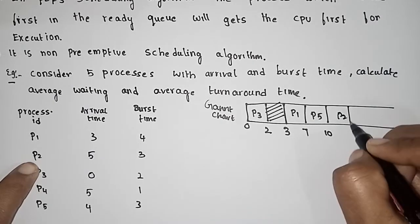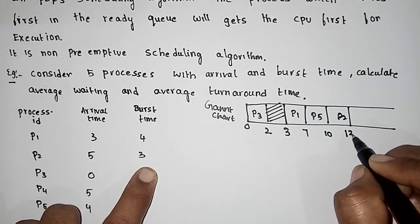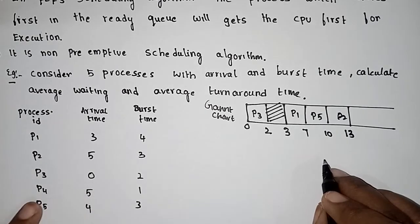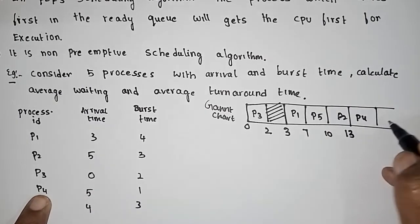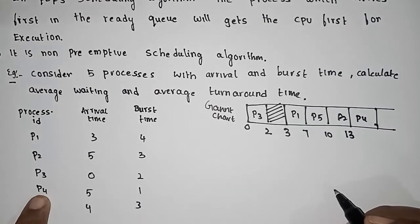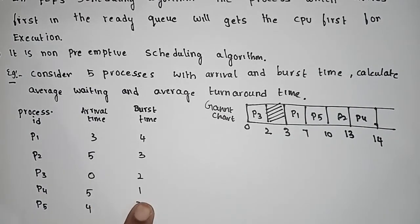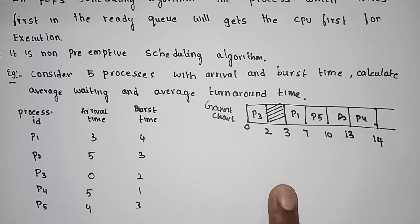P5 gets the CPU next. Then P2 gets the CPU at time 10, which has burst time 3, so it completes at 13. Next P4 starts at 13 and has burst time 1, completing at 14. This is the Gantt chart.